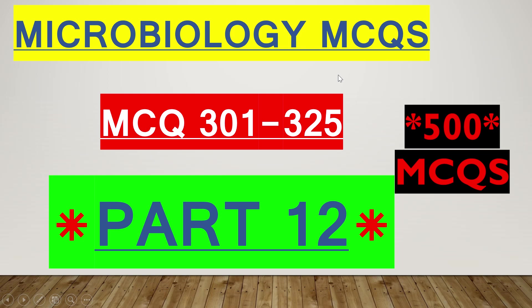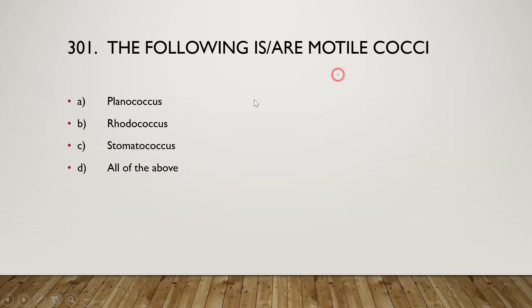The first question is: which of the following are motile cocci? The options are Planococcus, Rhodococcus, Tomatococcus, or all of the above. The right answer is option D — all of the above are motile cocci.